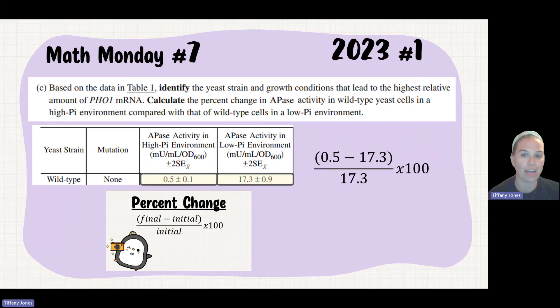Now if you did the opposite and you decided that the high phosphate was going to be your final value, then you would set it up with 0.5 minus your initial being 17.3 divided by the initial being 17.3 multiplied by 100. And this gives you a negative 97 percent.